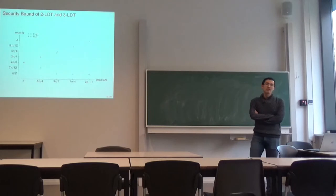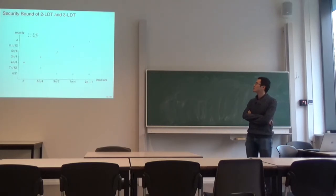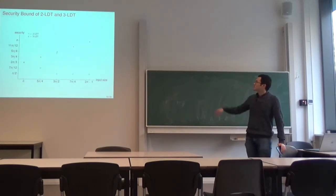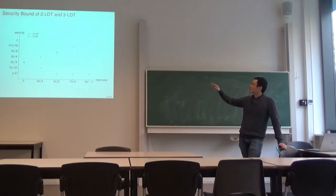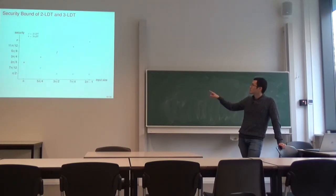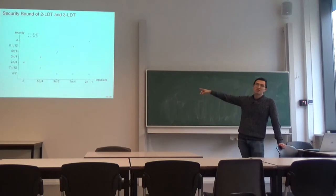In this graph, we compare the security of two-runs LTT with three-runs LTT. The security of two-runs LTT decreases with message length, while the security of three-runs LTT increases with message length. When the message length is near 2n, we get optimal n-bit security, as shown in the slide.